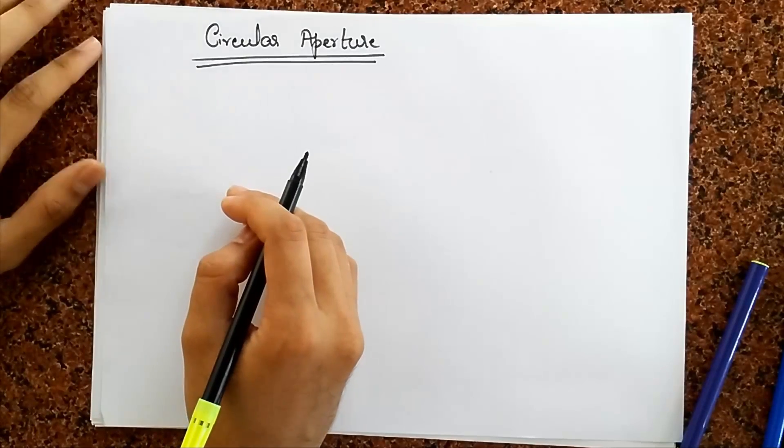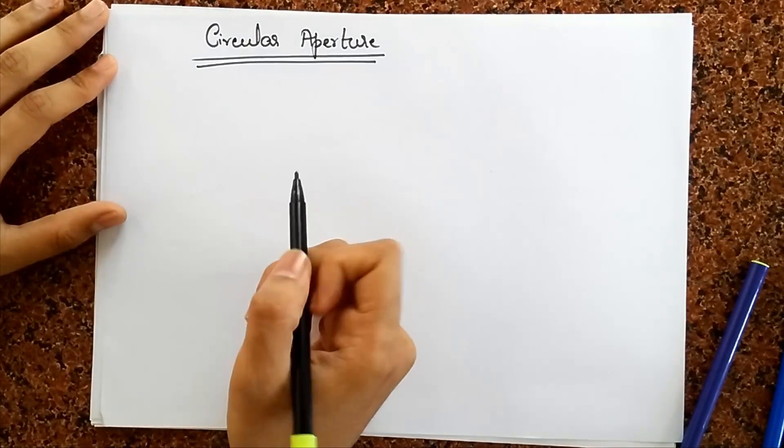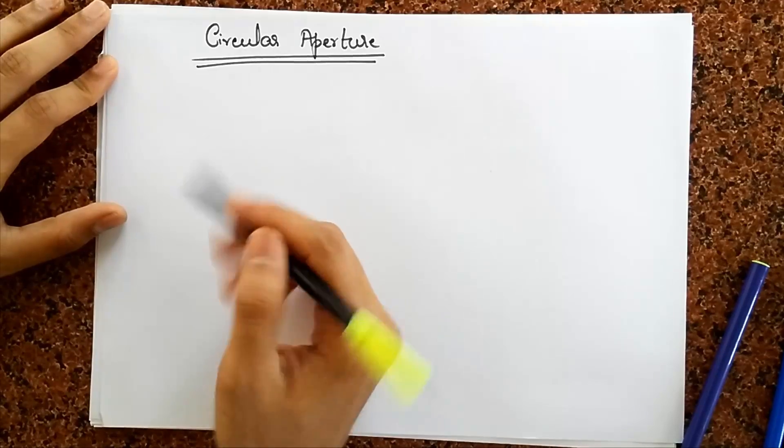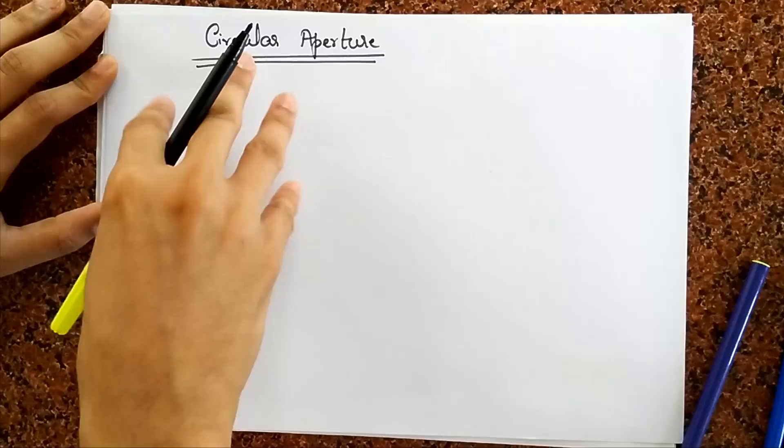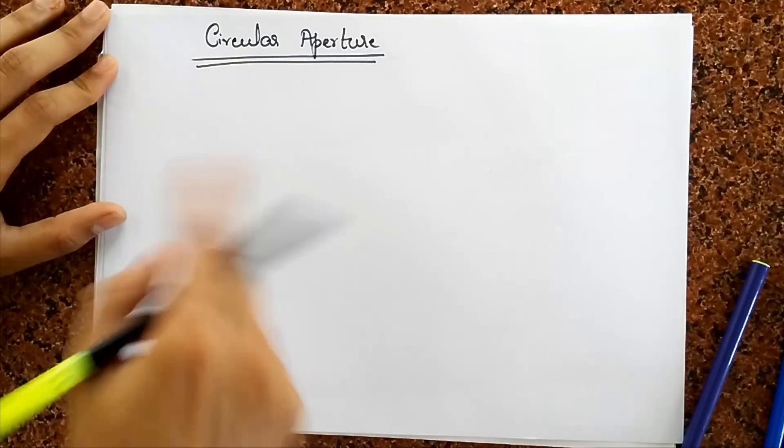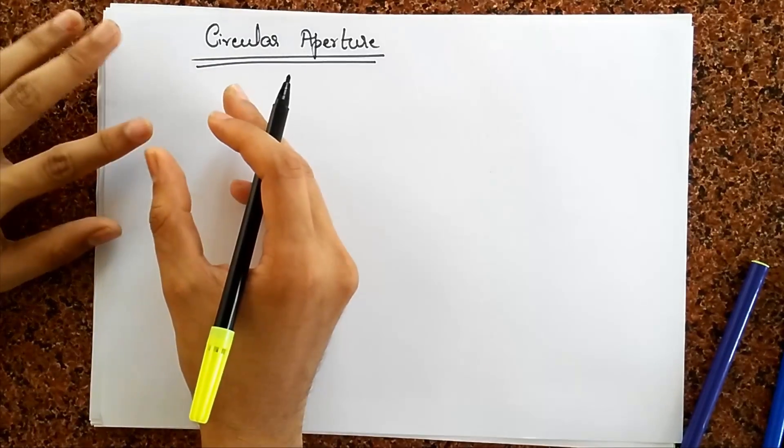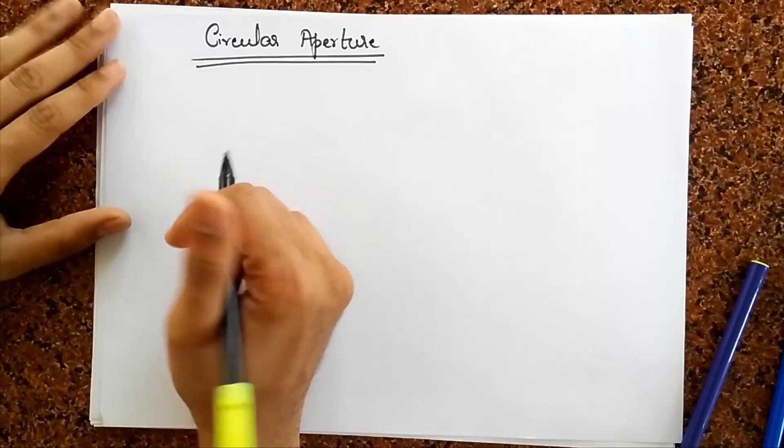So when you have a circular aperture like we discussed, you're not going to get a diffraction pattern which is linear. We're going to get a diffraction pattern which is circular and so we're gonna get rings. So you'll have a central bright ring and then you'll have dark rings and so on.